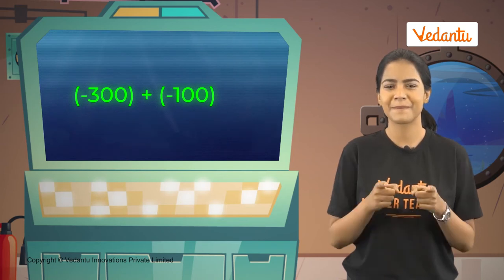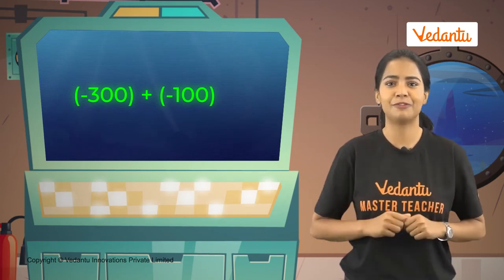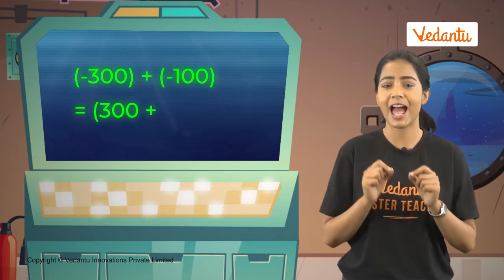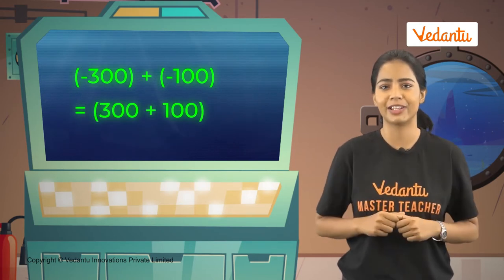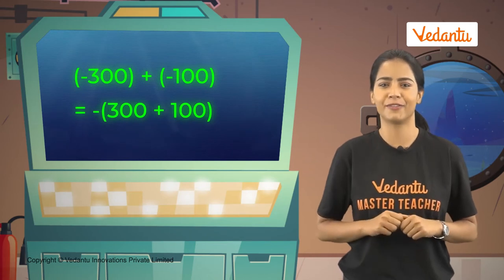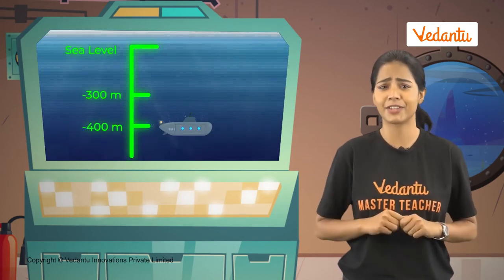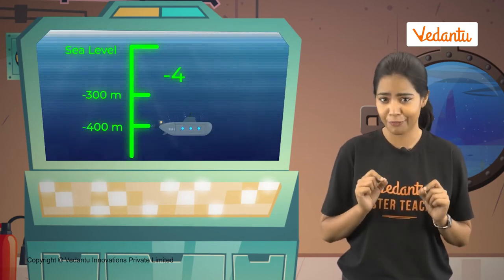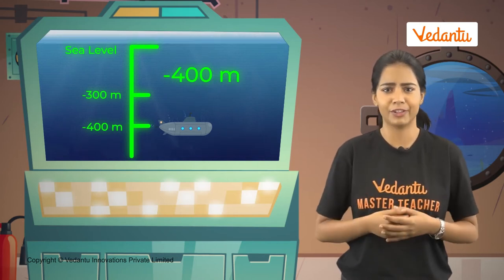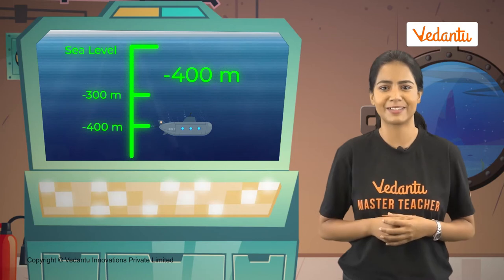To add two negative numbers, we will first add the values 300 and 100 and then put a negative sign in front of the sum. This gives us negative 400 meters, or in other words, a depth of 400 meters.